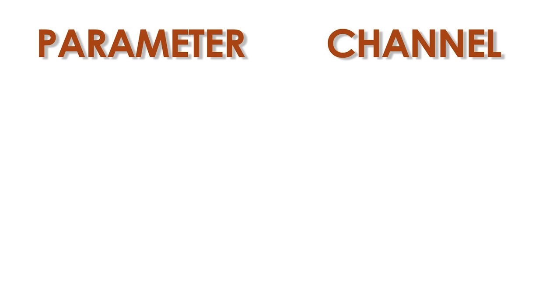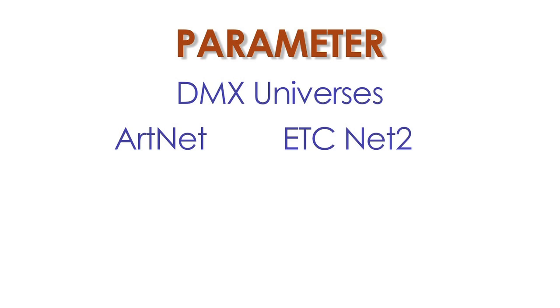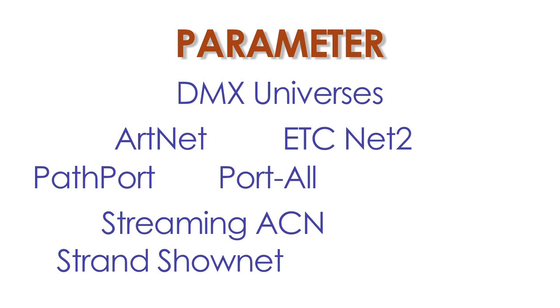The Grand MA also sees a difference between the number of DMX channels you need to patch and the number of DMX universes available. For example, let's say that you need to patch 10 of our eight-channel fixtures into a universe to send to a particular hanging position. This requires only 80 channels in the universe, but you won't be wasting the other 432, as you're free to patch them into any of the other available universes. It's all about the parameter, not the channel capability. You can spread the parameter calculation over multiple DMX universes, ArtNet universes, ETCNet2, PathPort, Portal, StreamingACN, or StrandShowNet.